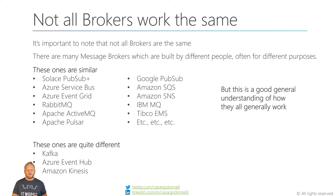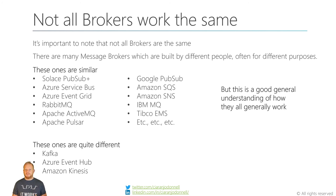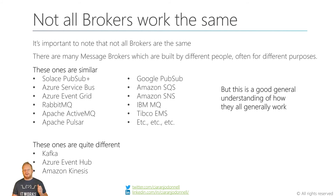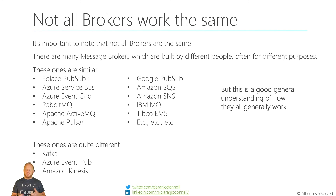It's important to note that not all brokers work the same way, but they are generally similar for a large selection of them. These include Solace PubSub Plus, Azure Service Bus, RabbitMQ, ActiveMQ, Pulsar, Google PubSub, Amazon SQS, Amazon SNS, IBM MQ, TIBCO, and many more. They're all built by different people for different purposes and operate slightly differently, but this is the general approach to how they all work.